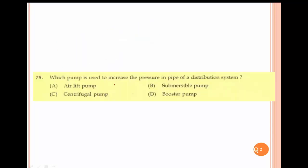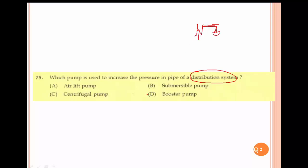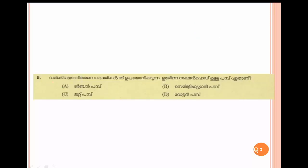The next question: which pump is used to increase the pressure in a pipe of a distribution system? If you have a distribution system with a main line, supply line, and domestic line, a pump is used to increase the pressure. The answer is a booster pump.